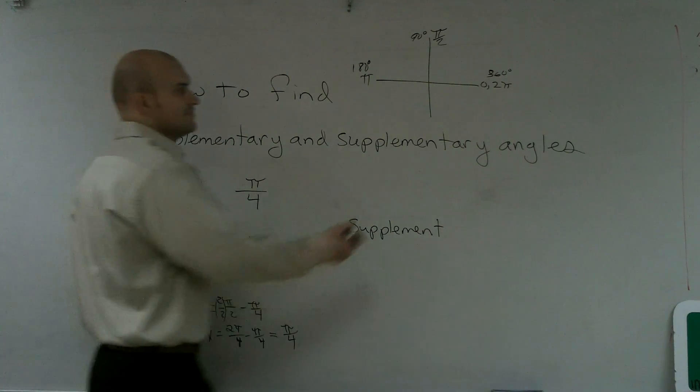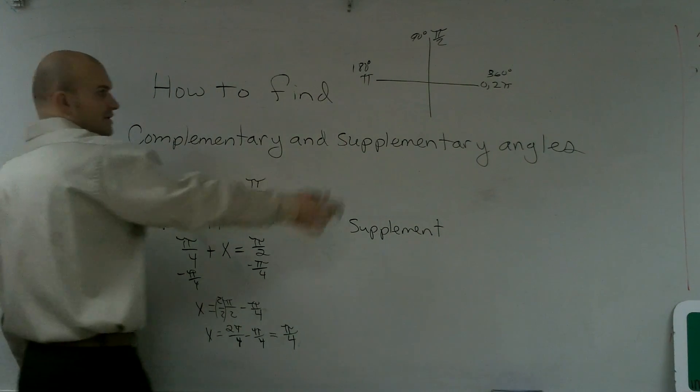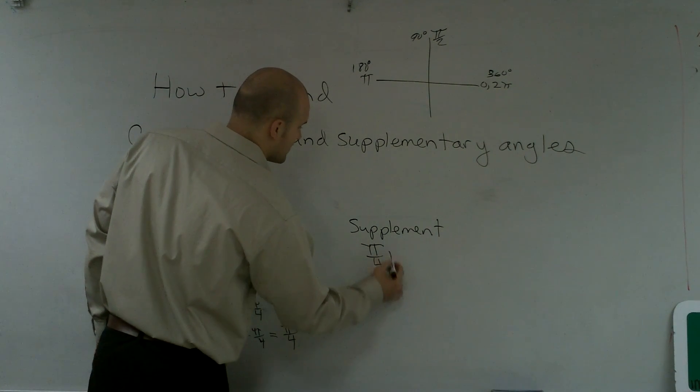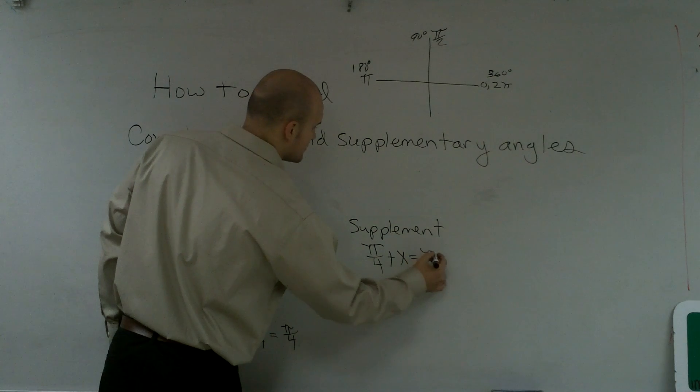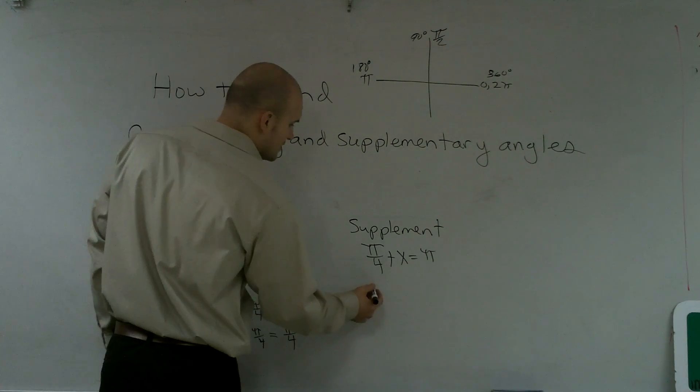To find the supplement, it's the exact same thing, but it's one angle plus another angle, it gives me 180 degrees, or π now we're referring to. So, π over 4 plus x equals π. Again, subtract π over 4 on both sides. So therefore, my angle equals x equals π minus π over 4.